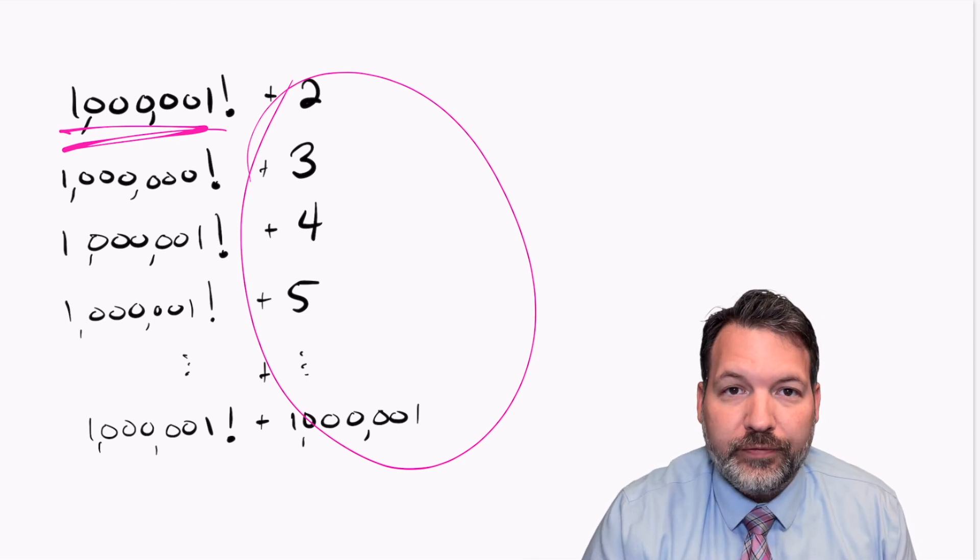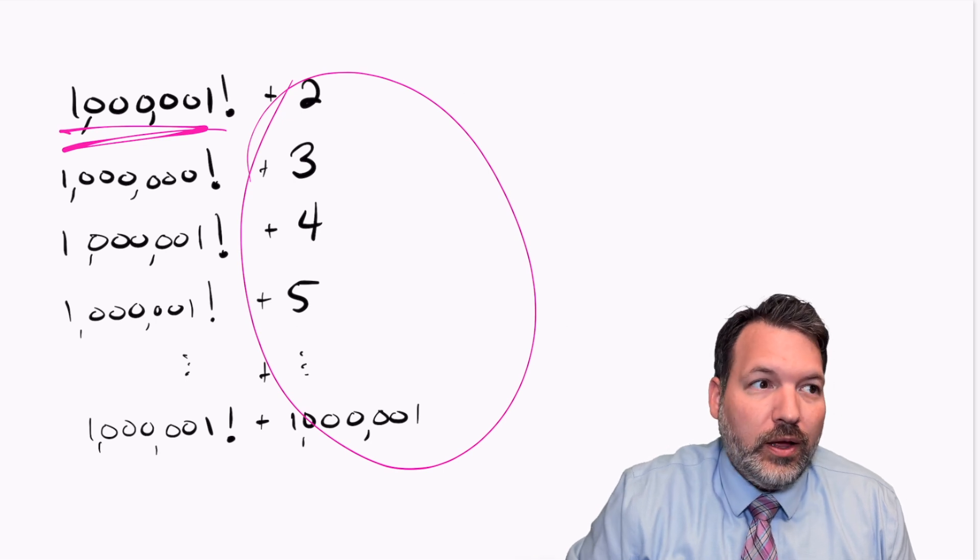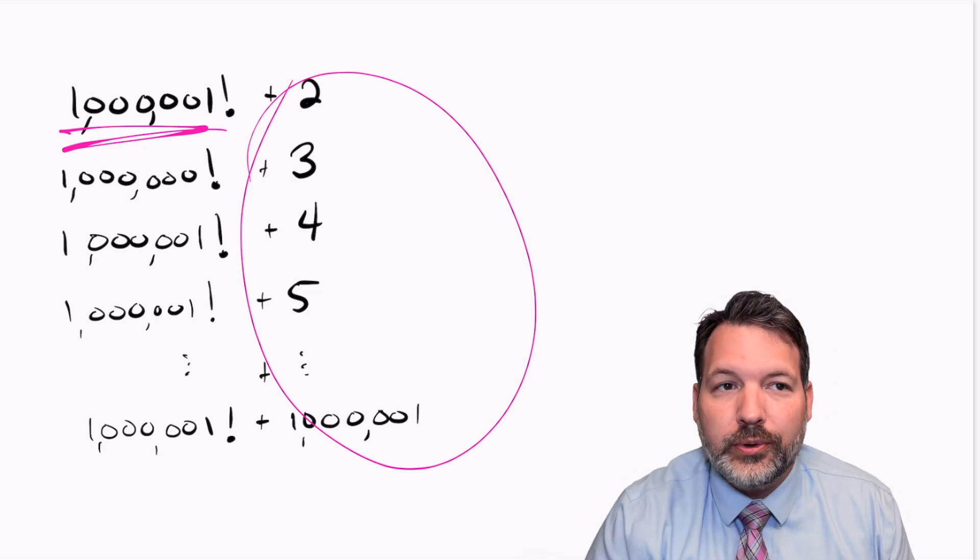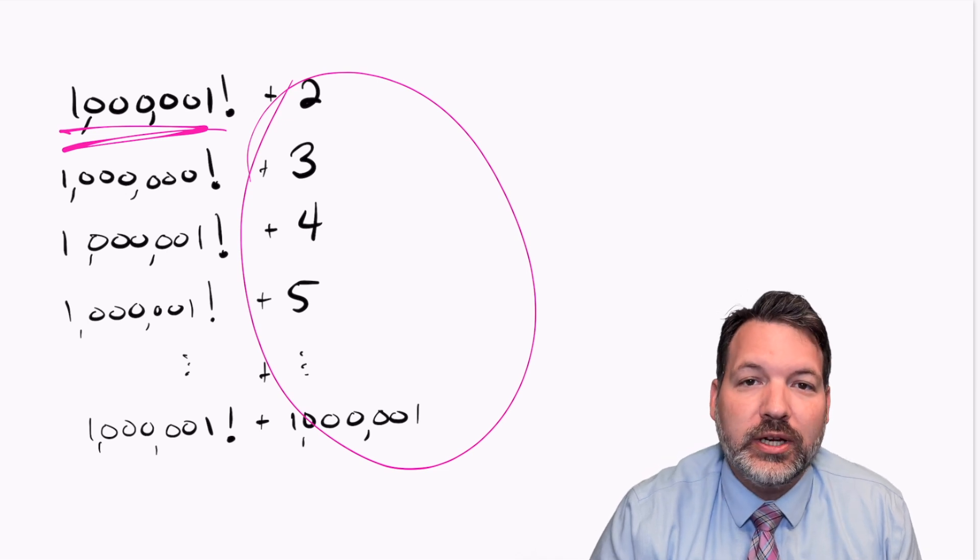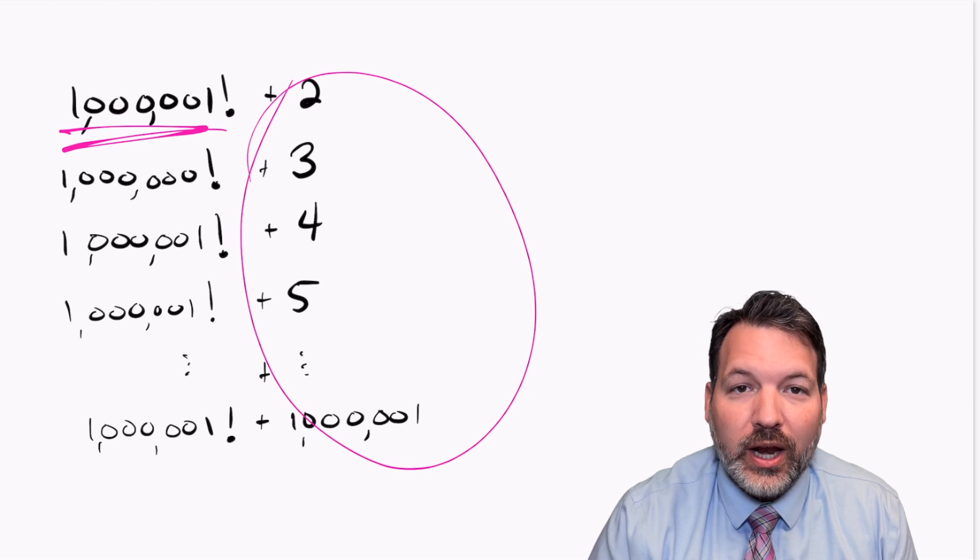As we move further and further down the number line, those factorials and their multiples are going to get more and more common. And therefore, we must see a reduction in the number of primes as we go further and further down the number line.